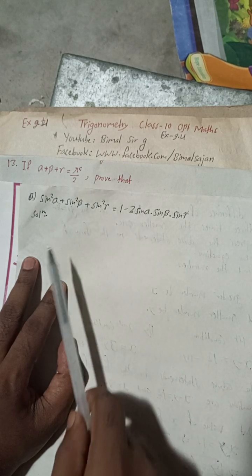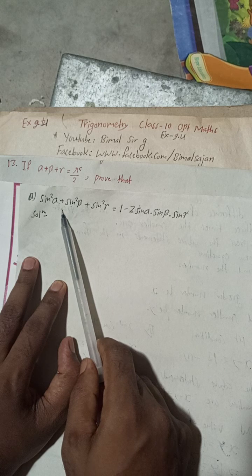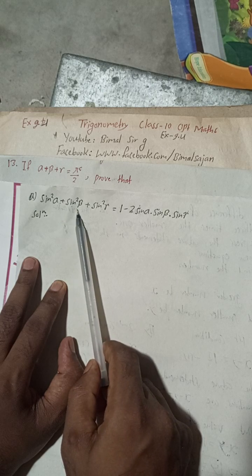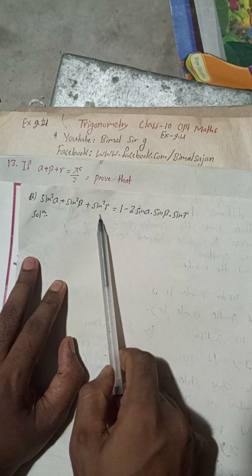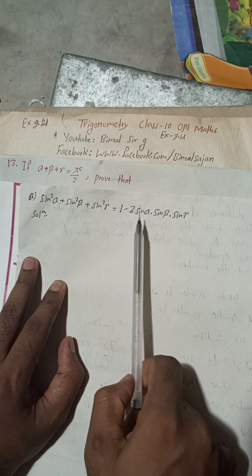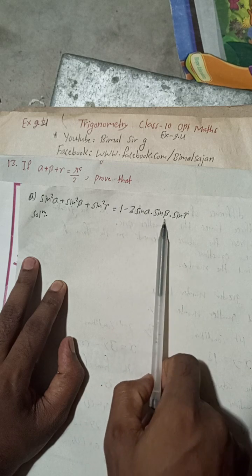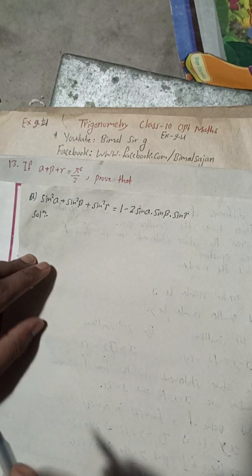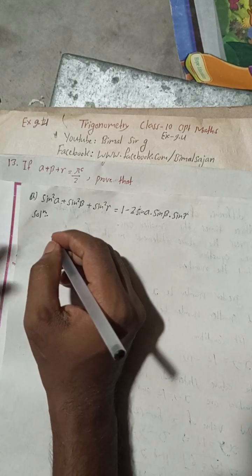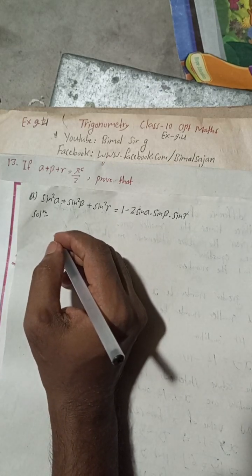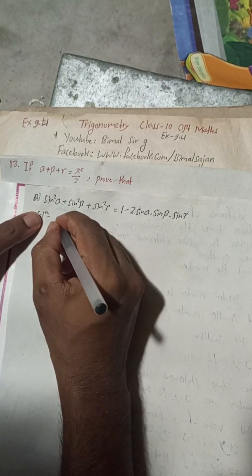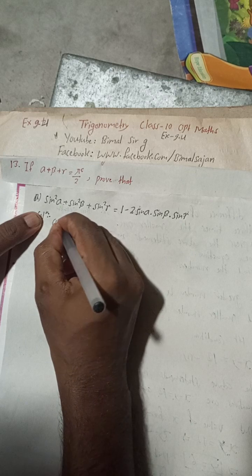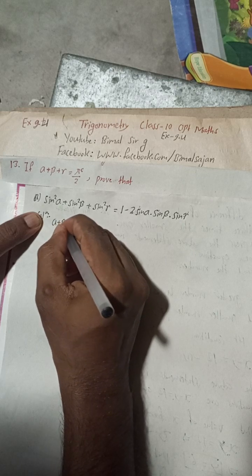Question 13: If α + β + γ = π/2 radians, prove that sin²α + sin²β + sin²γ = 1 − 2 sinα sinβ sinγ. So, solution. It is given that α + β + γ = π/2.